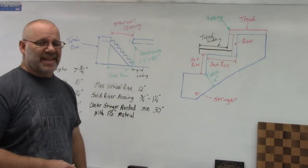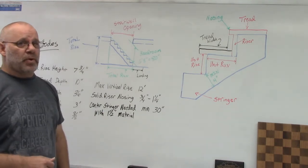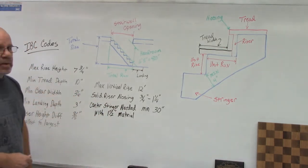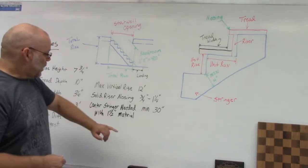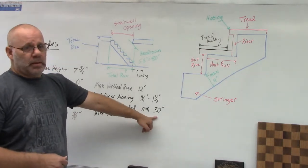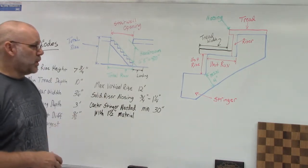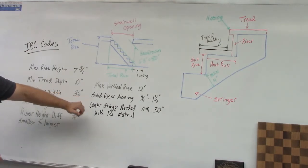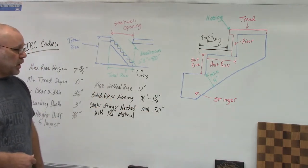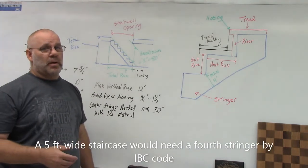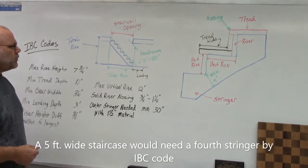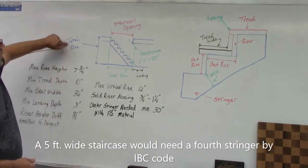The next code is when you need a center stringer. If your staircase is more than 30 inches wide, you need a center stringer. So if you're building a 36-inch staircase in your house, you have to cut three stringers. Also, if you're using one-inch material instead of inch-and-a-half material, you'd need a center stringer for support or it would be too bouncy. For four- or five-foot wide stairs, check your codes — you may need a fourth stringer.